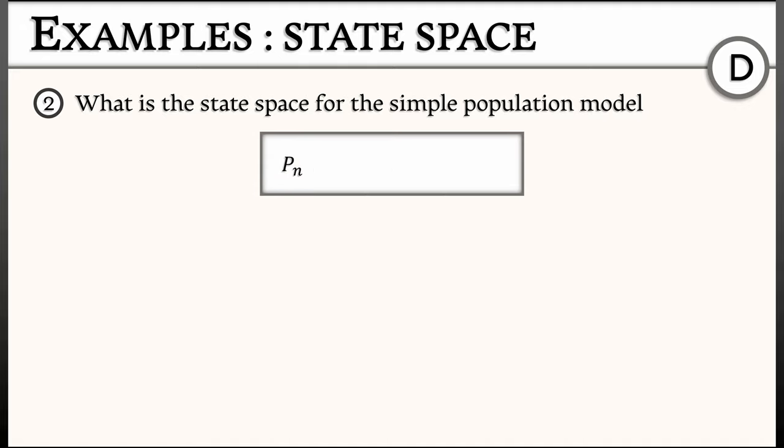Our population p sub n is governed by the following: p sub n plus 1 equals p sub n plus r times p sub n times quantity 1 minus p sub n. Here, p as a function of discrete time n is a population fraction, and it's going to be positive, definitely.